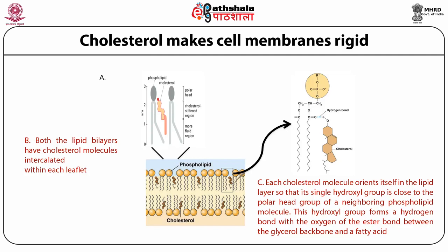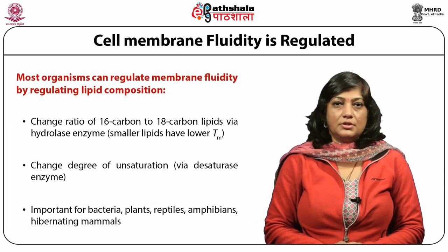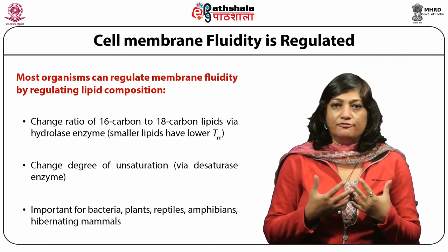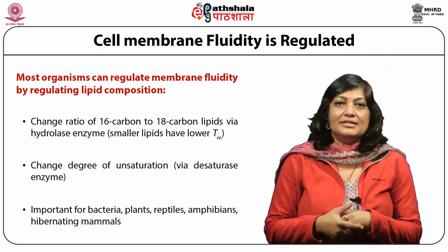Besides phospholipids and sphingolipids, cholesterol is also an important constituent of the lipid bilayer and imparts rigidity to the cell membrane. As shown in part A of this figure, cholesterol is intercalated between two phospholipids. In part B, cholesterol is intercalated within each leaflet so that its single hydroxyl group is close to the polar head group of a neighboring phospholipid, forming a hydrogen bond with the oxygen of the ester bond between the glycerol backbone and a fatty acid. The presence of cholesterol imparts rigidity and broadens the effective melting temperature.